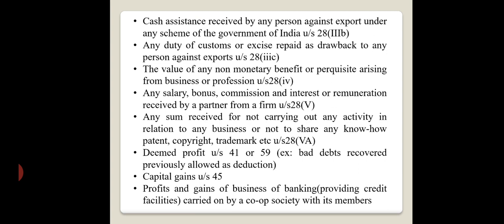Any sum received for not carrying out any activity in relation to any business, or not sharing any know-how, patent, copyright, trademark, etc. is income. Then, deemed profit under Section 41 to 59 — that is, bad debts recovered that were previously allowed as deductions — if you had written off bad debts and recover the amount during the year, that should be called income.